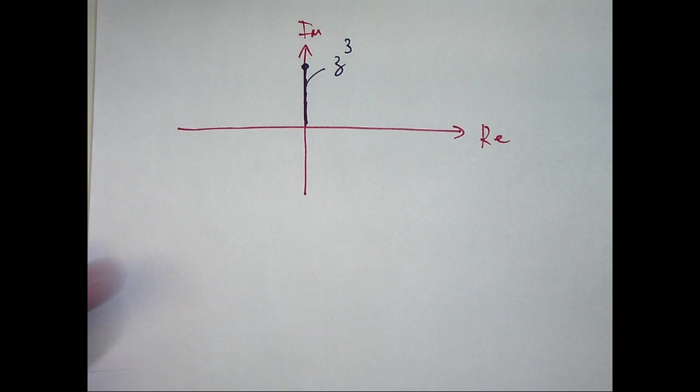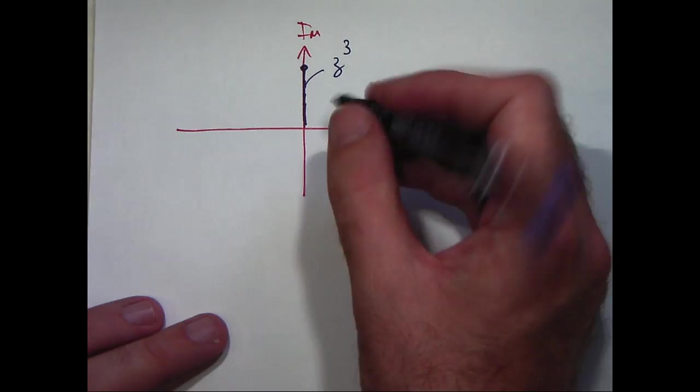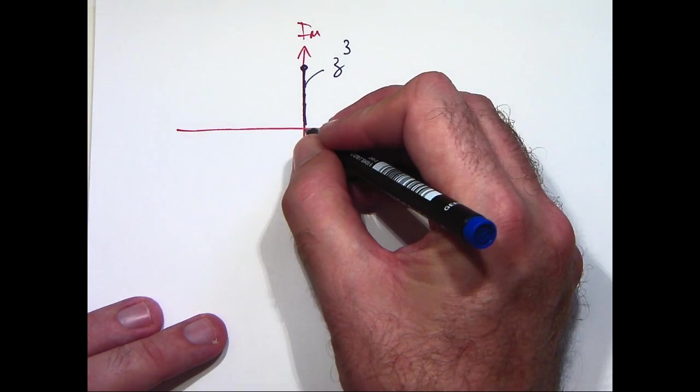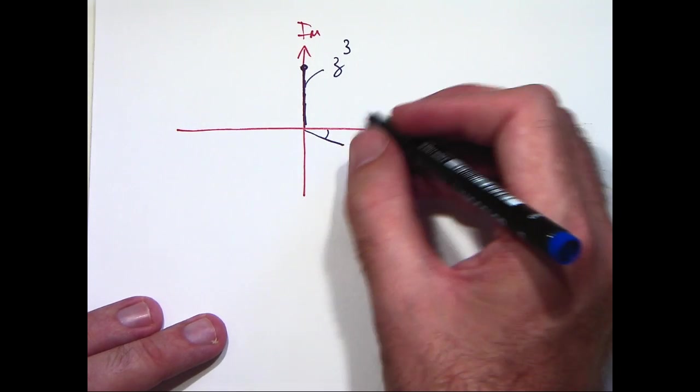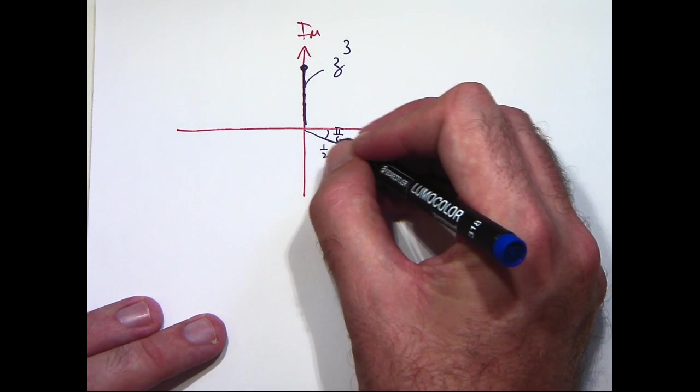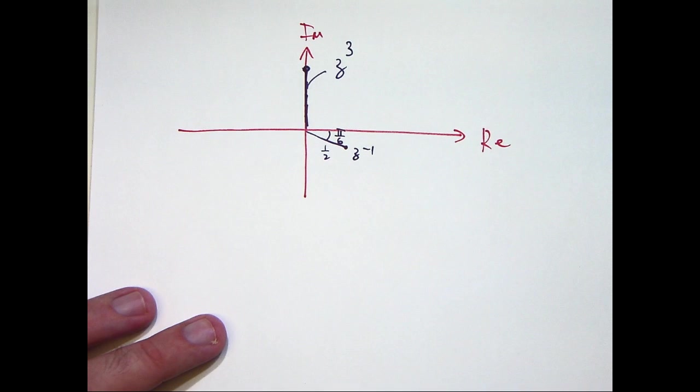Secondly, we want to plot 1/2 e^(-iπ/6). So we go out 1/2 unit and rotate π/6 in the clockwise direction. This is z⁻¹.